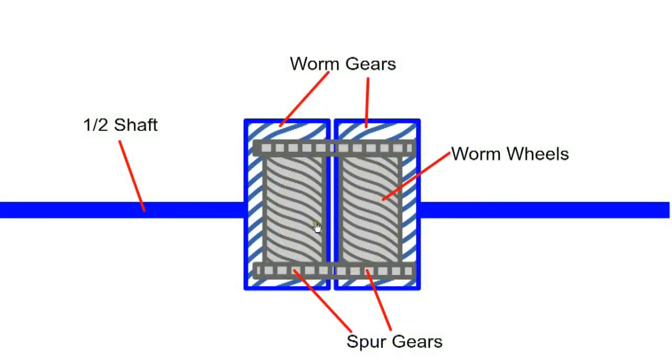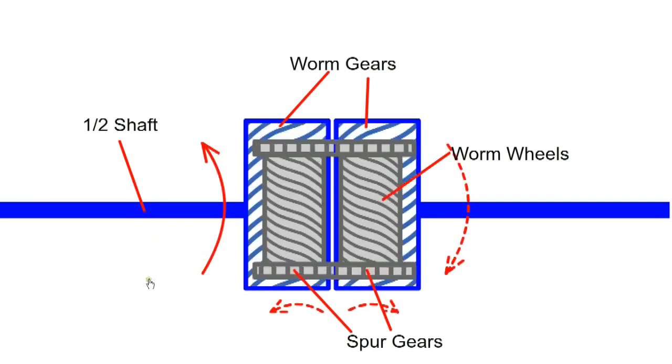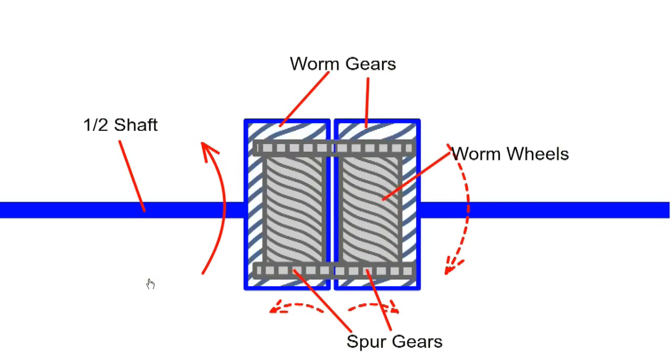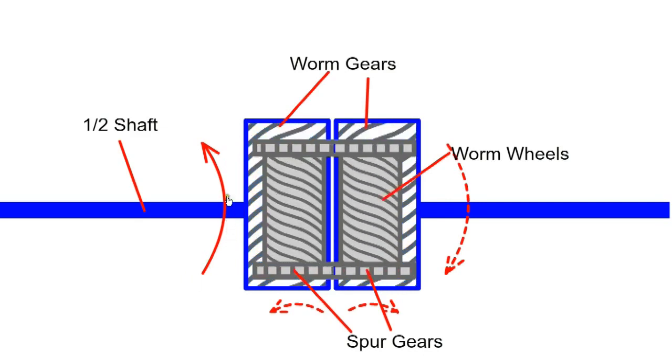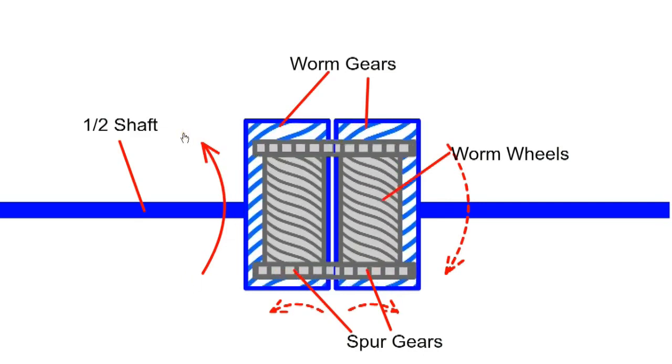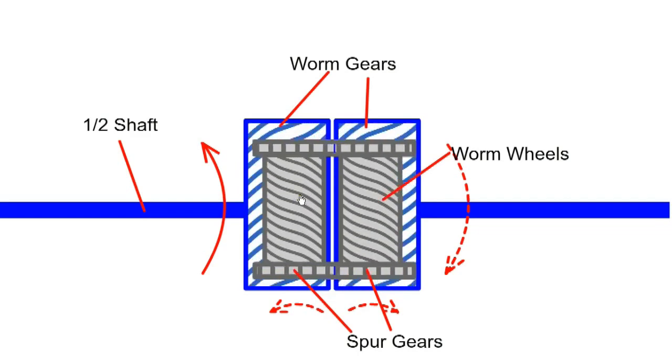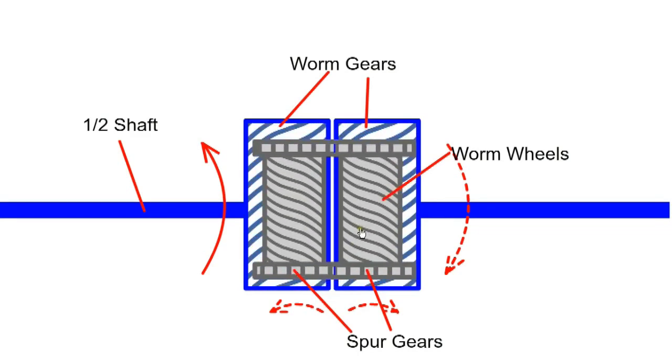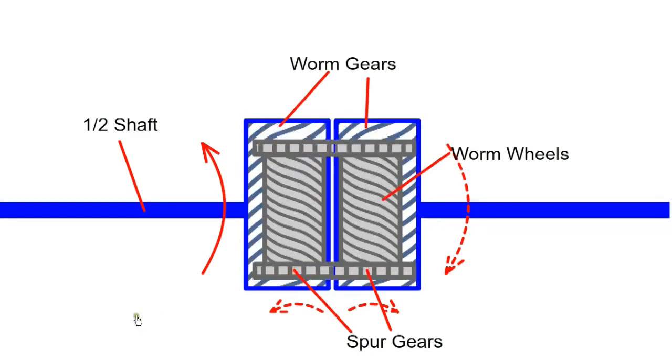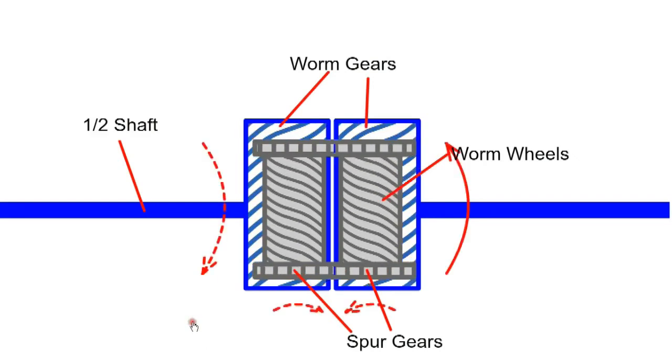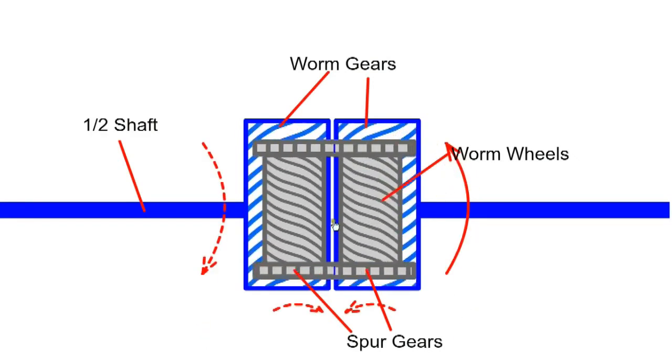To demonstrate the operation of the Torsen diff, we'll keep the cage stationary and rotate one of the wheels, effectively jacking up the car and rotating one wheel forward and the other wheel backwards. If the left wheel is rotated in this direction, it will drive the worm, which in turn will drive the other wheel via the spur gears. We'll have a similar effect if we rotate in the opposite direction.